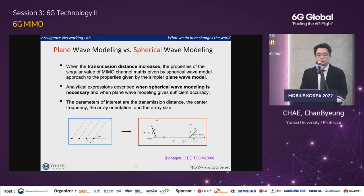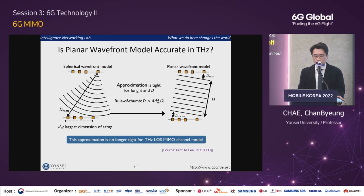Until the 5G era, we never worried about the wavefront — we always assumed the plane wave for system design and performance analysis. There is a decision boundary to determine between the spherical wavefront model and the plane wave front model. It is called the Fraunhofer distance, given by the equation: D > 4d² / λ, where capital D is the distance and small d means the aperture size.